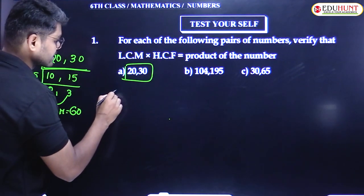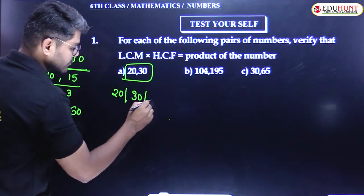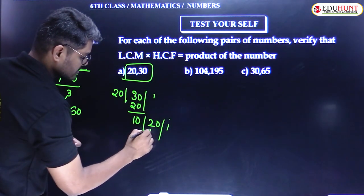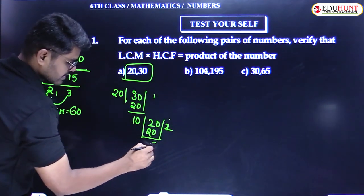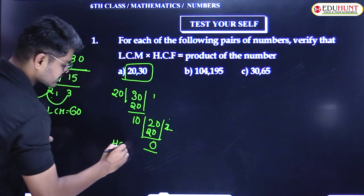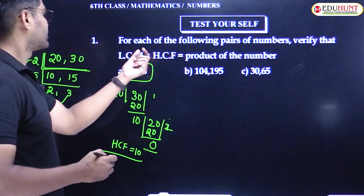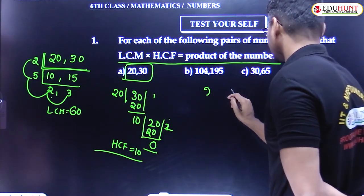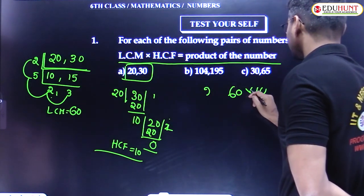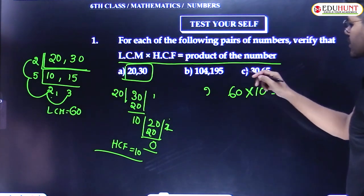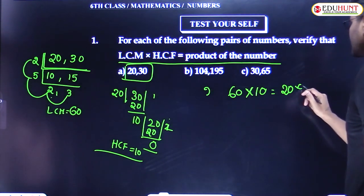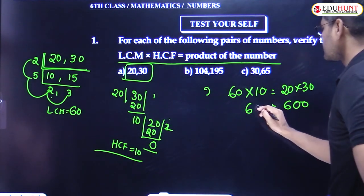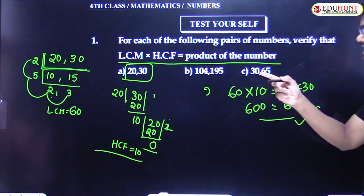Now find the HCF of 20 and 30. Dividing 30 by 20, the remainder is 10. Then dividing 20 by 10, the remainder is 0. So HCF is 10. Now LCM × HCF = 60 × 10 = 600, and the product of the numbers 20 × 30 = 600. So this is verified. Let's see the next one.